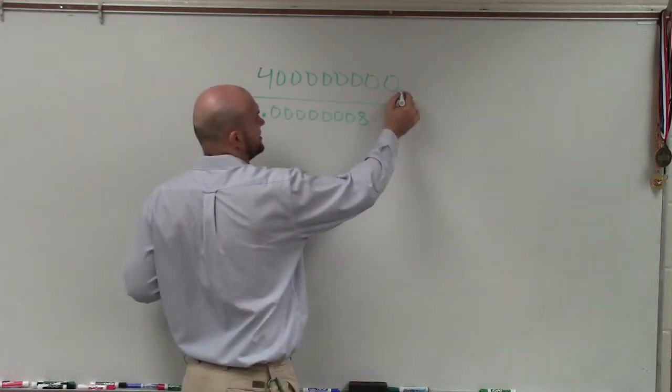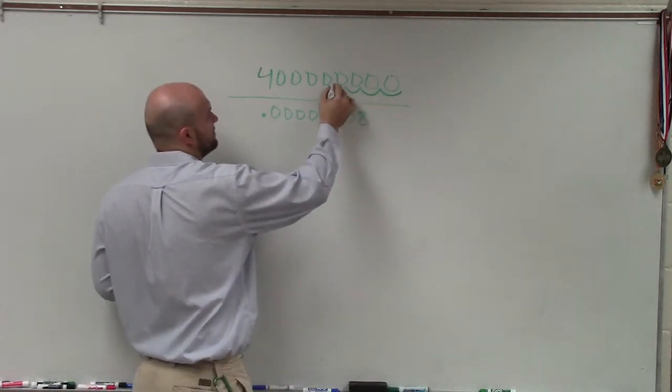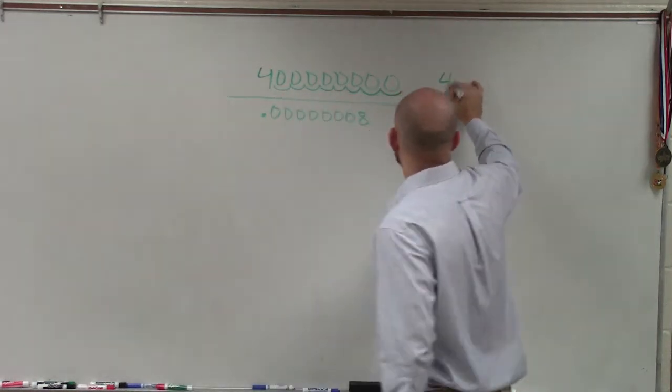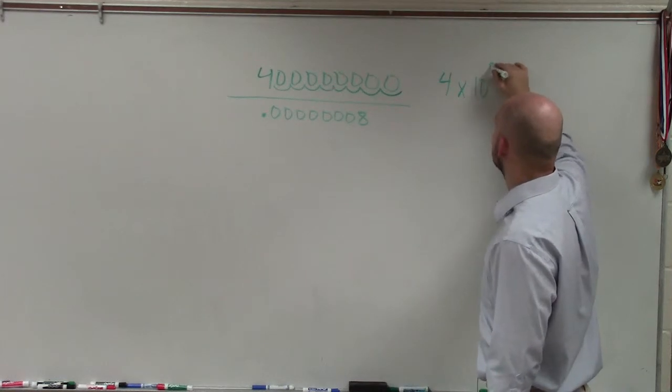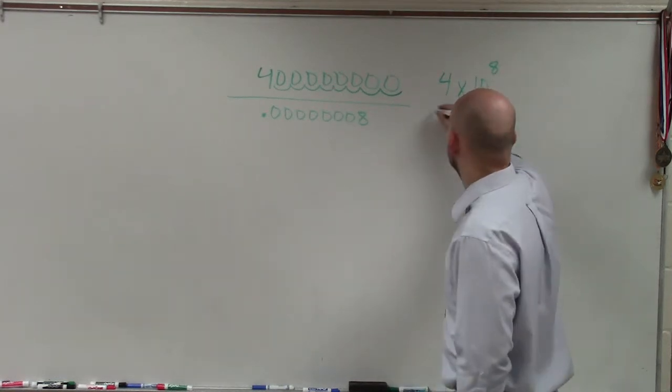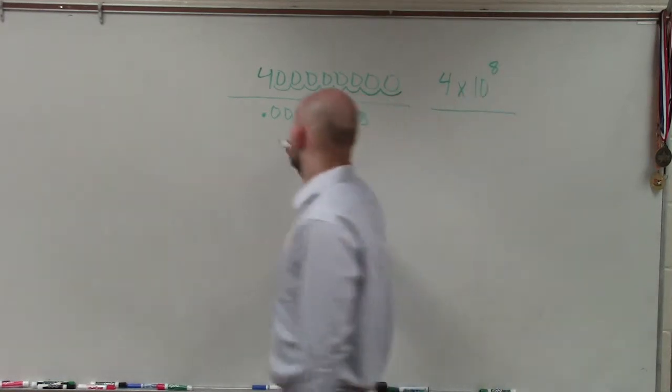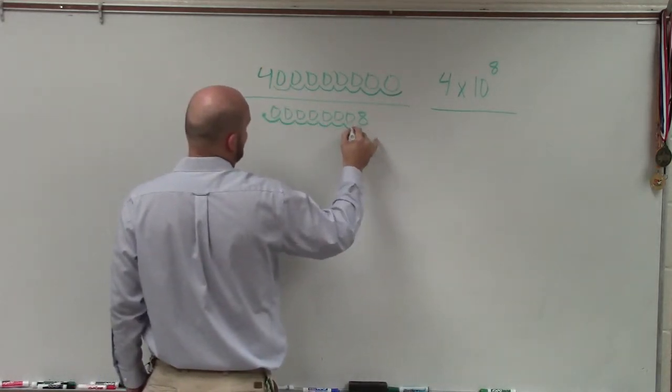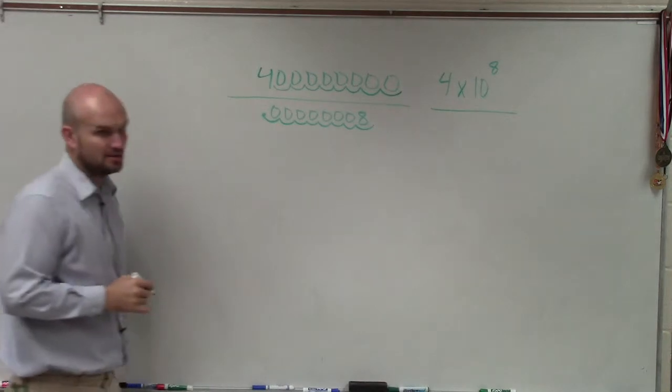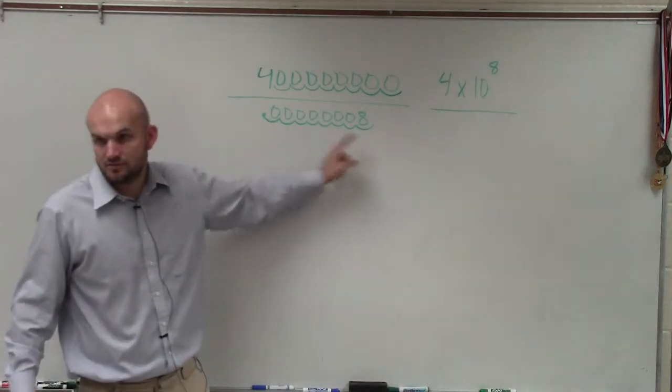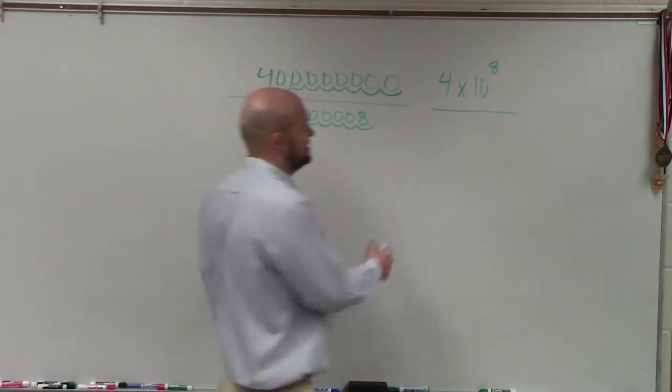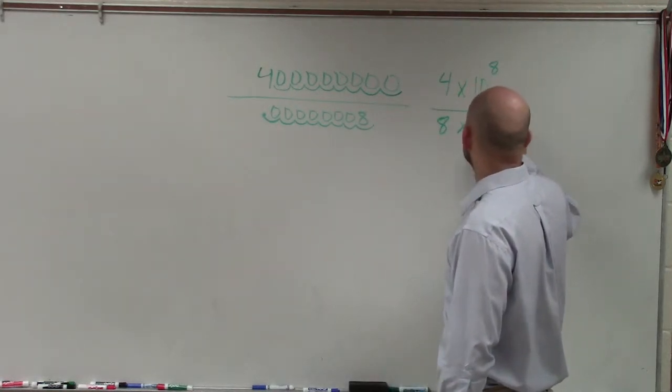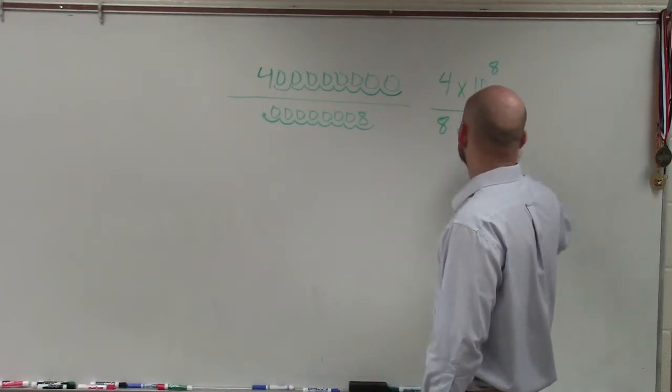So if we have this here, we could write 1, 2, 3, 4, 5, 6, 7, 8. So I can say this is 4 times 10 to the 8th power divided by, here I'd have to go 1, 2, 3, 4, 5, 6, 7, 8 again. Because I'd have to go to the left or to the right. So that's going to be 8 times 10 to the negative 8.